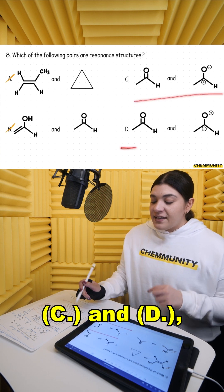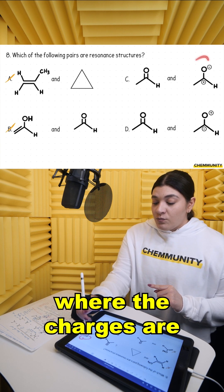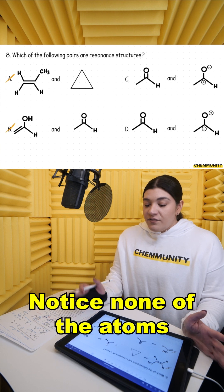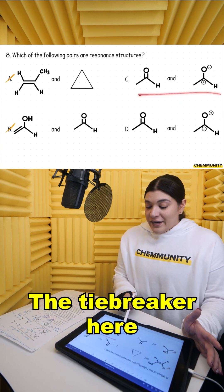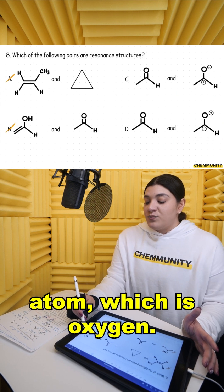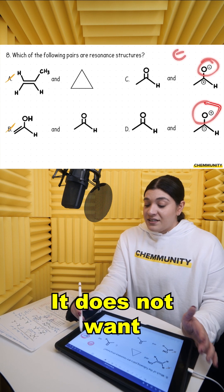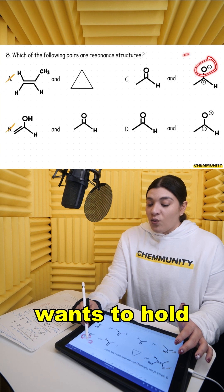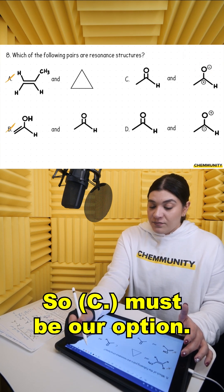When we get to C and D, they're very similar. The only difference is where the charges are placed. Notice none of the atoms moved, so great, that checks out. The tiebreaker here is looking at the electronegative atom, which is oxygen. That wants to be negative — it does not want to be positive. The more electronegative atom wants to hold the negative charge. So C must be our option.